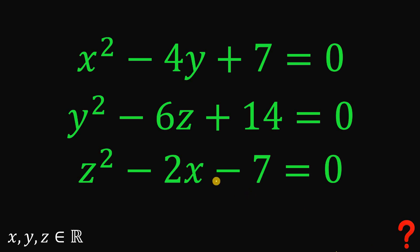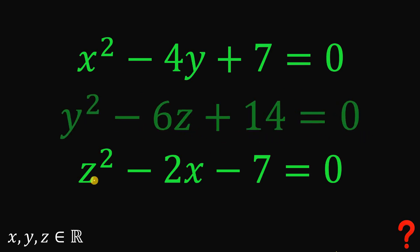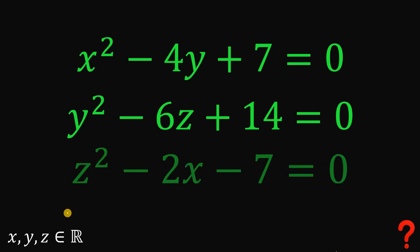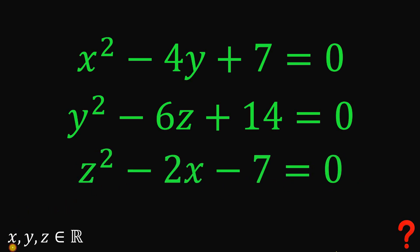So given these equations: x squared minus 4y plus 7 equals 0; y squared minus 6z plus 14 equals 0; and z squared minus 2x minus 7 equals 0, wherein x, y, and z are all real numbers, our goal is to solve for the values of x, y, and z.